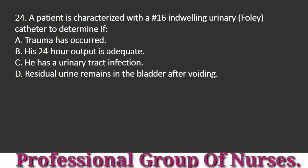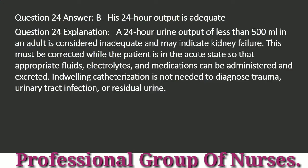Question 24: A patient is catheterized with a No. 16 indwelling urinary (Foley) catheter to determine if: a. Trauma has occurred. b. His 24-hour output is adequate. c. He has a urinary tract infection. d. Residual urine remains in the bladder after voiding. Answer: b. His 24-hour output is adequate. Explanation: A 24-hour urine output of less than 500 mL in an adult is considered inadequate and may indicate kidney failure. This must be corrected while the patient is in the acute state so that appropriate fluids, electrolytes, and medications can be administered and excreted. In-dwelling catheterization is not needed to diagnose trauma, urinary tract infection, or residual urine.